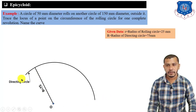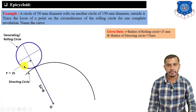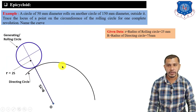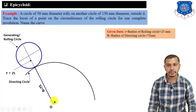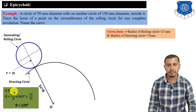First, draw the directing circle with radius 75 mm, taking center at O. Then draw the rolling circle with radius 25 mm — this is our generating circle, which will roll on the directing circle for one revolution. When the rolling circle completes one revolution, it covers an arc length of 2πr on the directing circle. We can write: R·θ = 2π·r, so θ = 2πr / R.